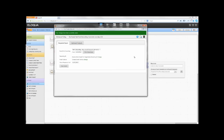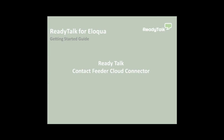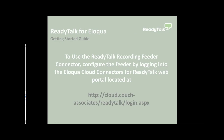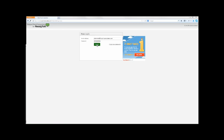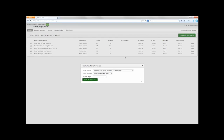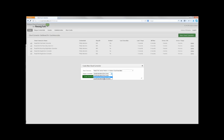The ReadyTalk for Eloqua connectors are now configured and the campaign is ready for execution. The ReadyTalk Contact Feeder will pull ReadyTalk meeting attendance data and add new contacts to Eloqua. To use the ReadyTalk Contact Feeder, configure the feeder by logging into the Eloqua Cloud Connectors for ReadyTalk web portal. Once you log in, you will see your dashboard. You will see the New Cloud Connector button on the top right. In the drop-down labeled Cloud Connector, select the ReadyTalk Contact Feeder.